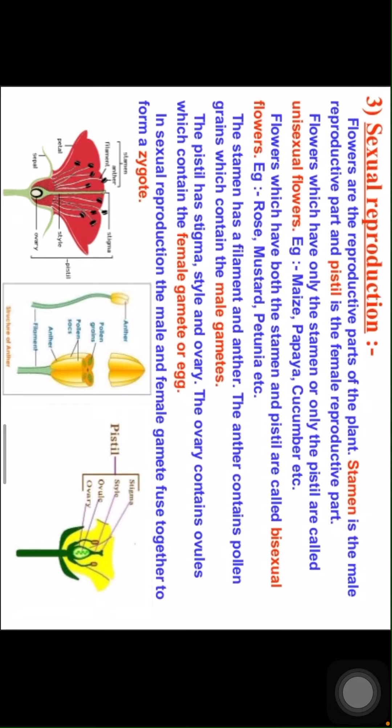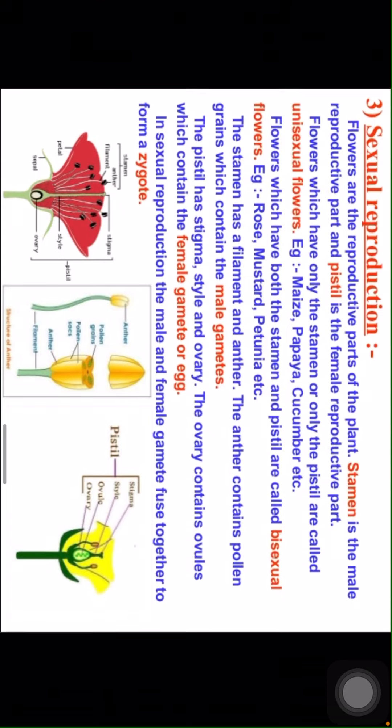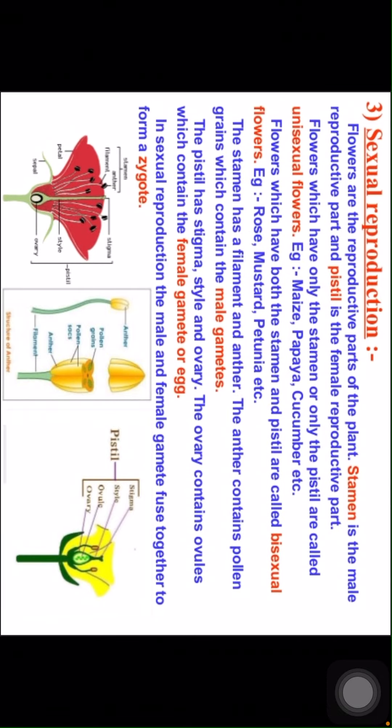Flowers which have both the stamen and pistil are called bisexual flowers. Examples: rose, mustard, petunia. The stamen has a filament and an anther. The anther contains pollen grains which contain the male gametes. The pistil has a stigma, style and ovary.